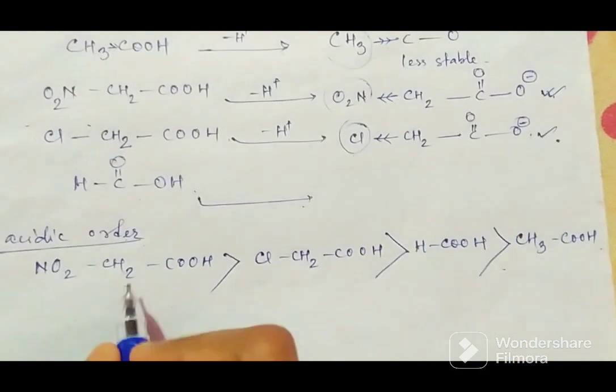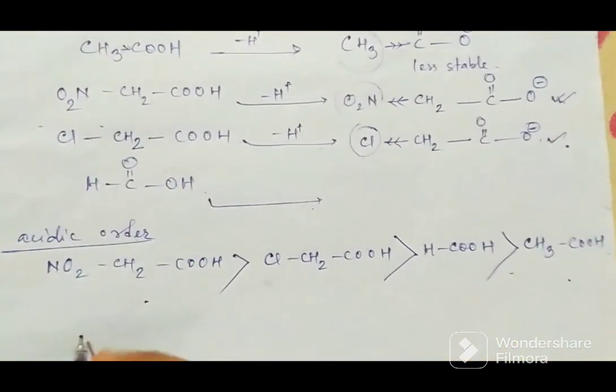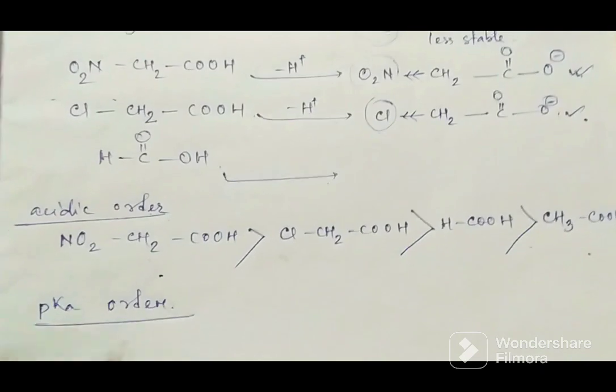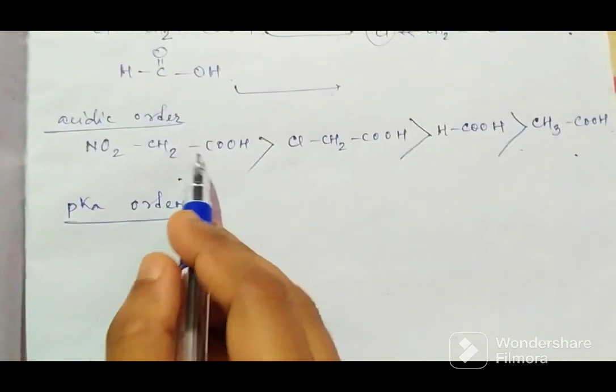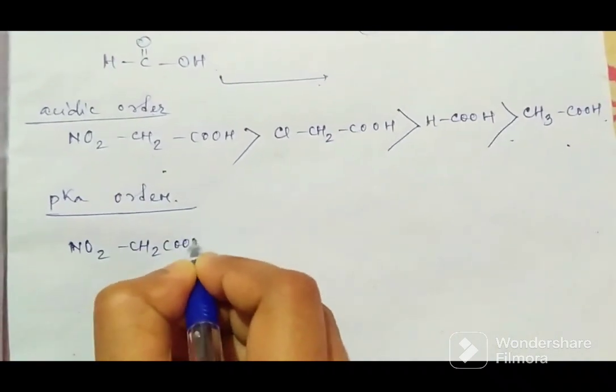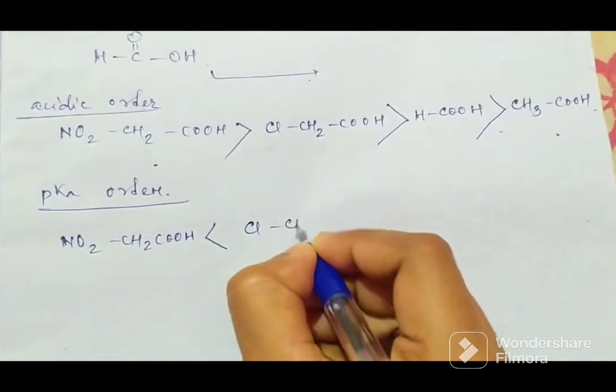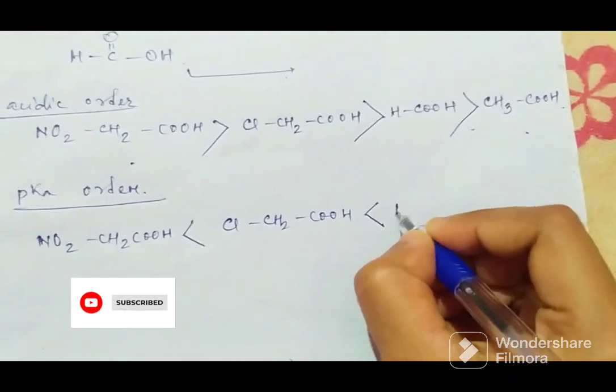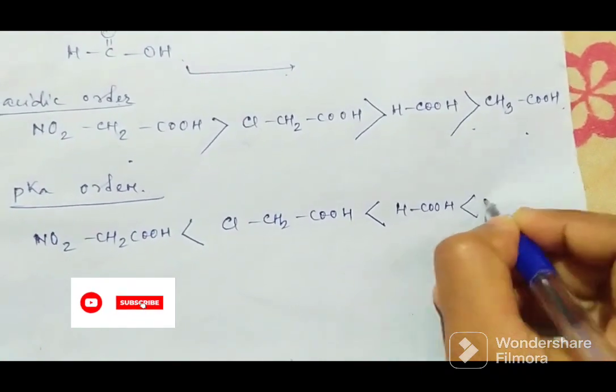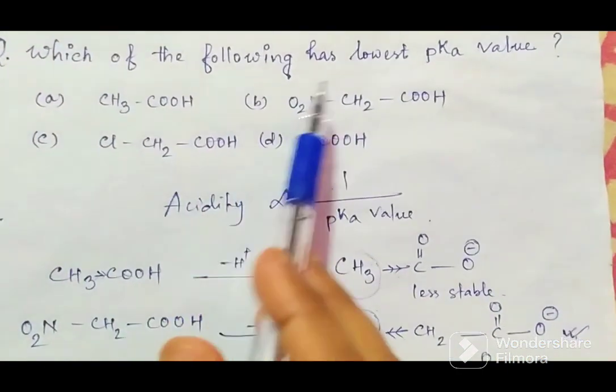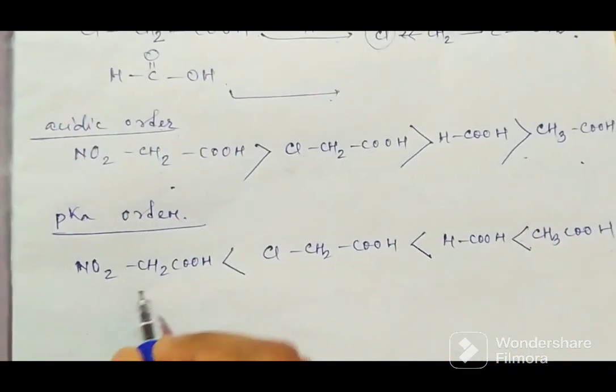Acetic acid. Okay, now acidic order this way. That means this is more acidic, this is less acidic. pKa value is inverse of the acidic value. So this is more acidic, that means this has less pKa value. So NO2-CH2-COOH, it is less than this one. Just change the greater-than symbol. Now the question is, which of the following has lowest pKa value? So the answer is this one.